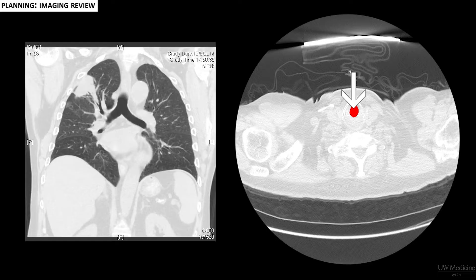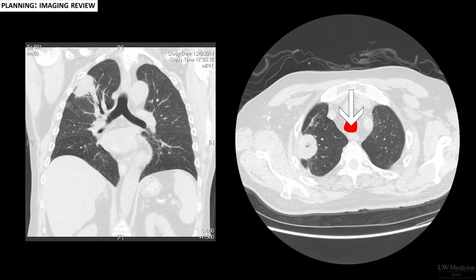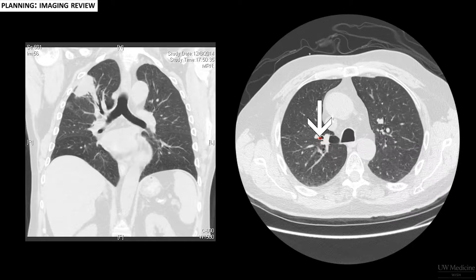Before getting started, you should review the imaging carefully to identify which subsegmental airway leads to the biopsy target. Typically, we do this by following the airways while scrolling through the CT, performing a virtual bronchoscopy.